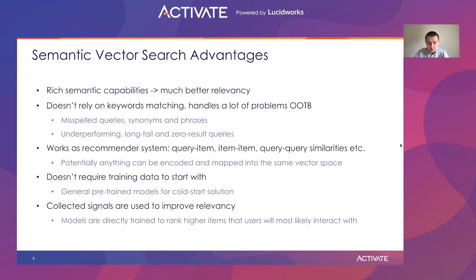Fortunately, training data isn't really required to start with. There are plenty of general pre-trained encoders for cold start scenarios. But if training data can be obtained, it can be used to improve relevancy even further. Models are directly trained to rank higher those items that users will most likely interact with.